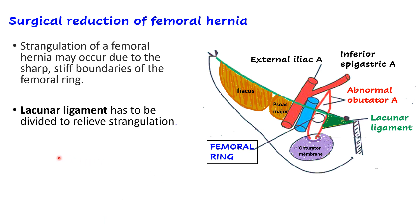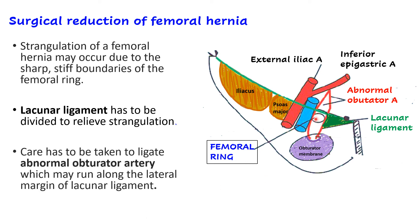To relieve strangulation, the surgeon must enlarge the femoral ring. The inguinal ligament anteriorly cannot be cut; the pecten pubis and pectineus posteriorly cannot be cut; and medially the femoral vein is at risk. Therefore, the only option is to cut the lacunar ligament, which forms the medial boundary, to increase the space of the femoral ring.